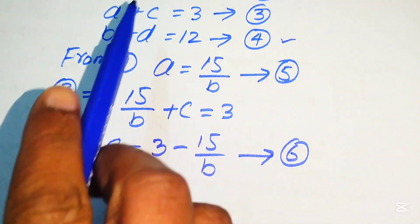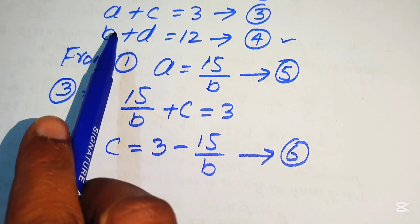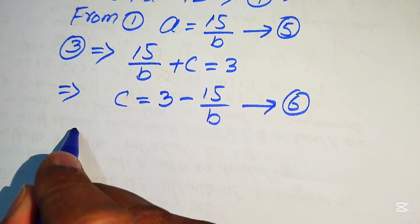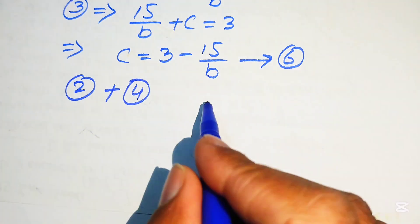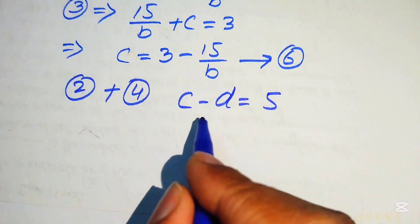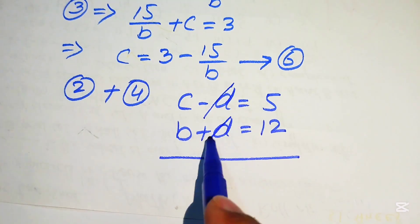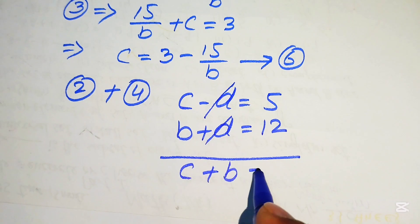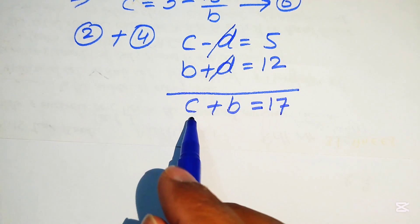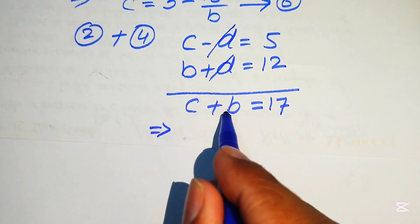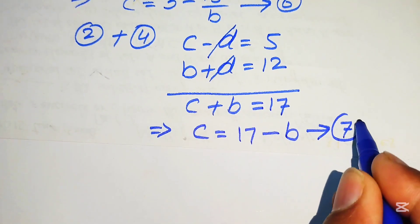Now we focus on equations 2 and 4. Equation 2 is C minus D equals 5, and equation 4 is B plus D equals 12. When we add these two equations, D is eliminated and we get C plus B equals 17. Moving B to the right-hand side: C equals 17 minus B. We call this equation 7.